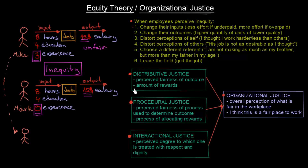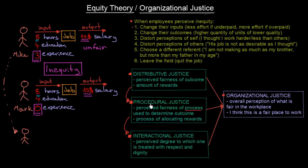Then we have procedural justice — the perceived fairness of the process used to determine outcome, or the process of allocating rewards. Their salaries might be based purely on the number of hours they put into work, which is unfair for Mike who has more experience than Mark. When the process of determining earnings feels unfair, you feel that procedural justice is not well developed in your organization.